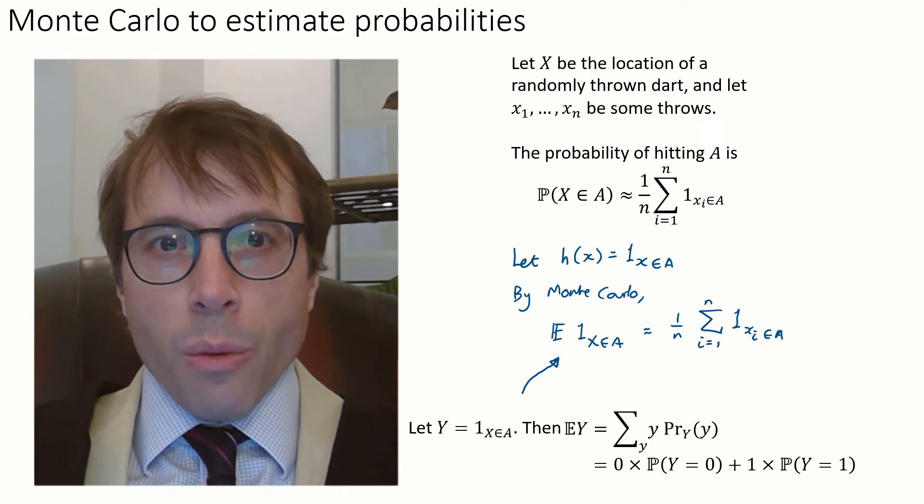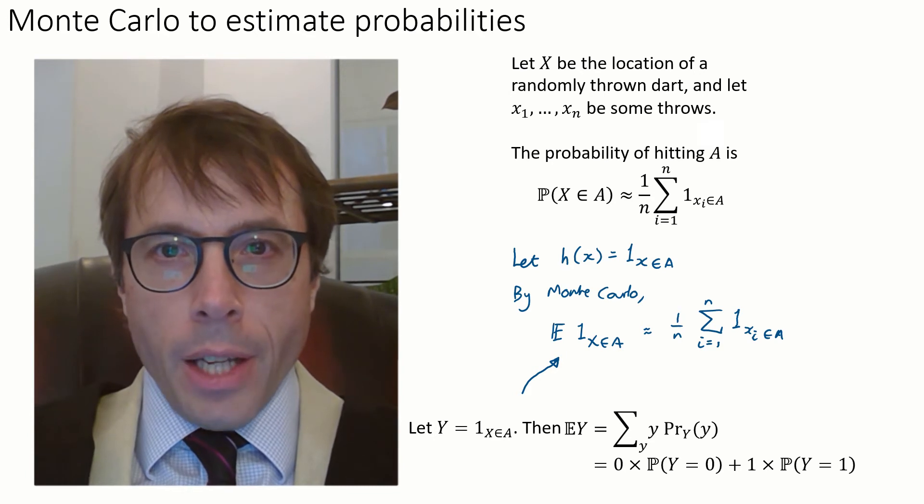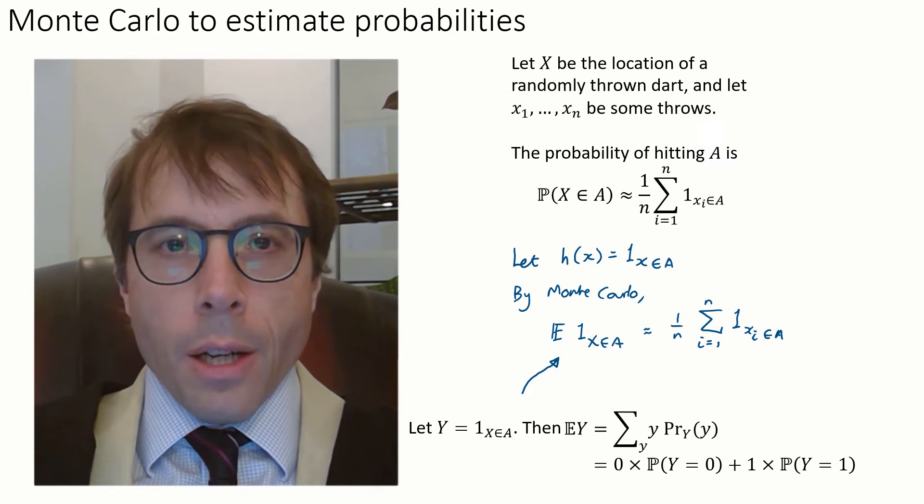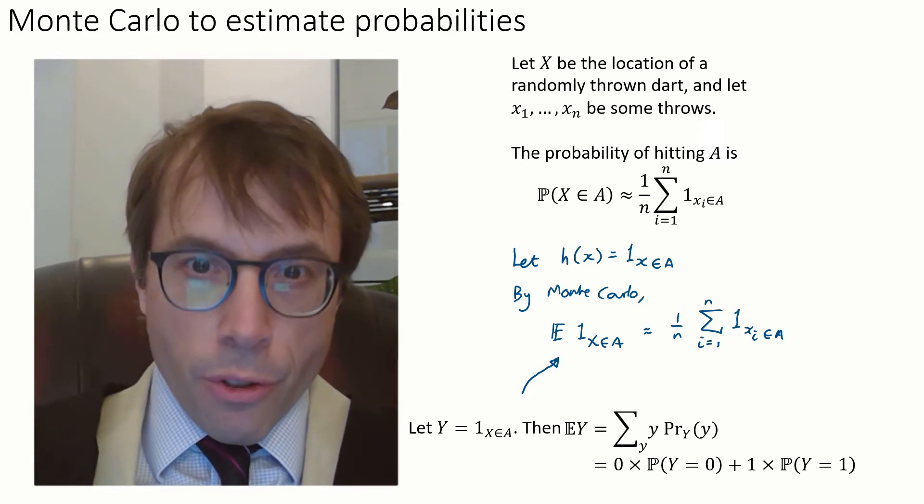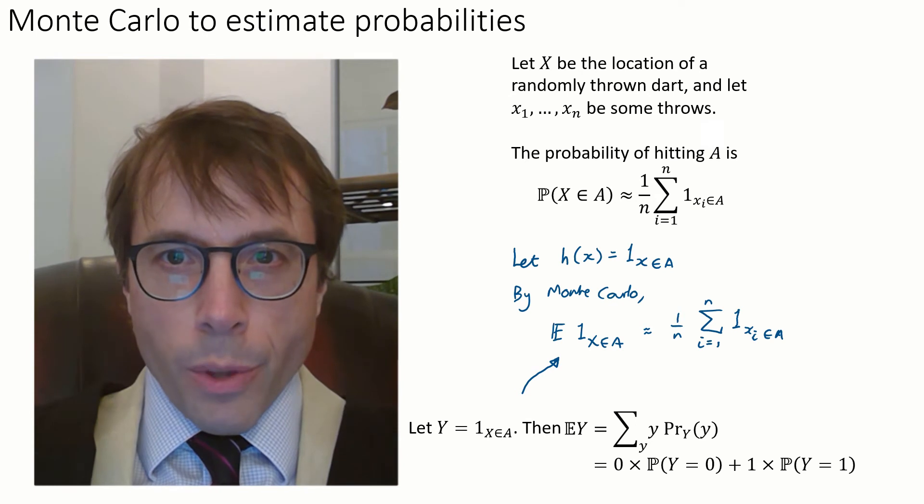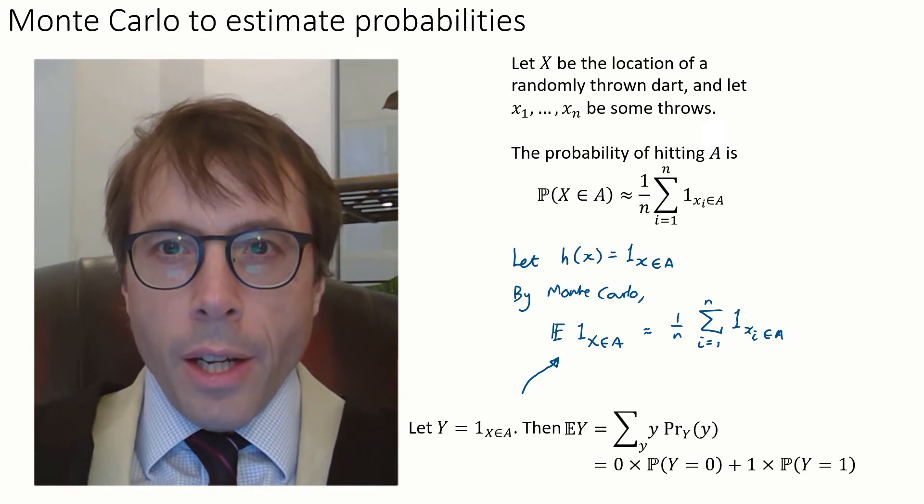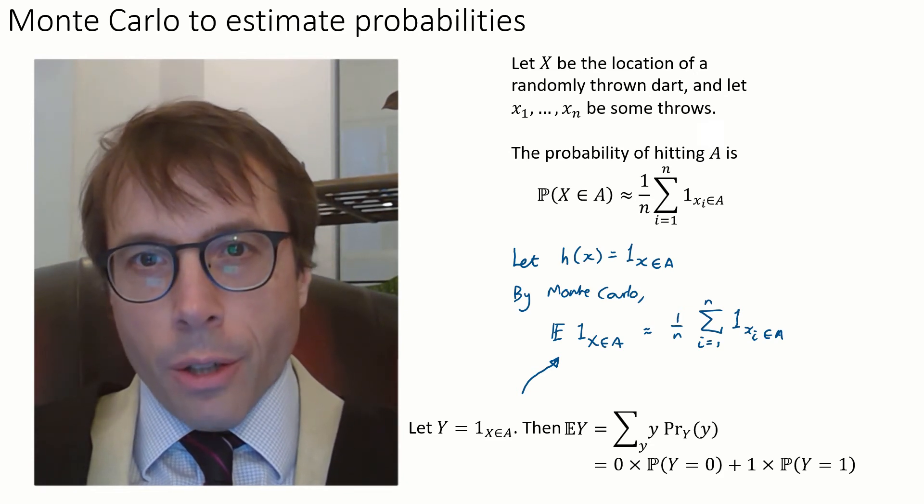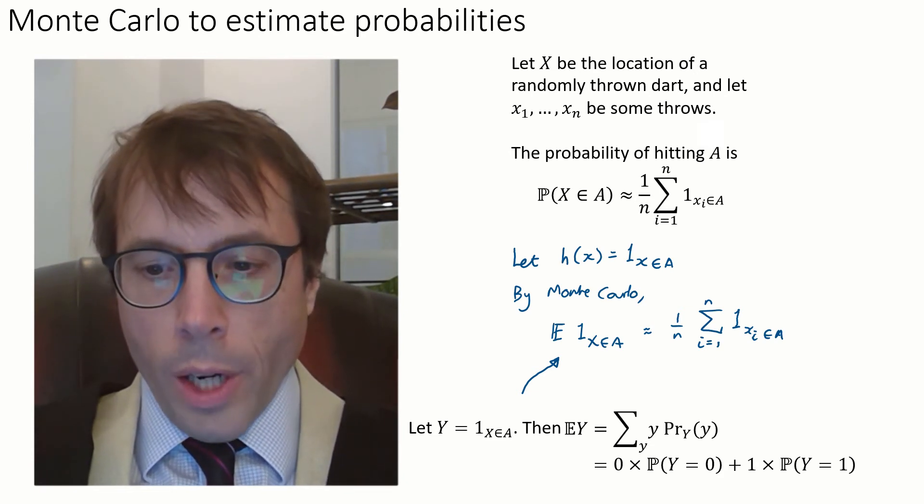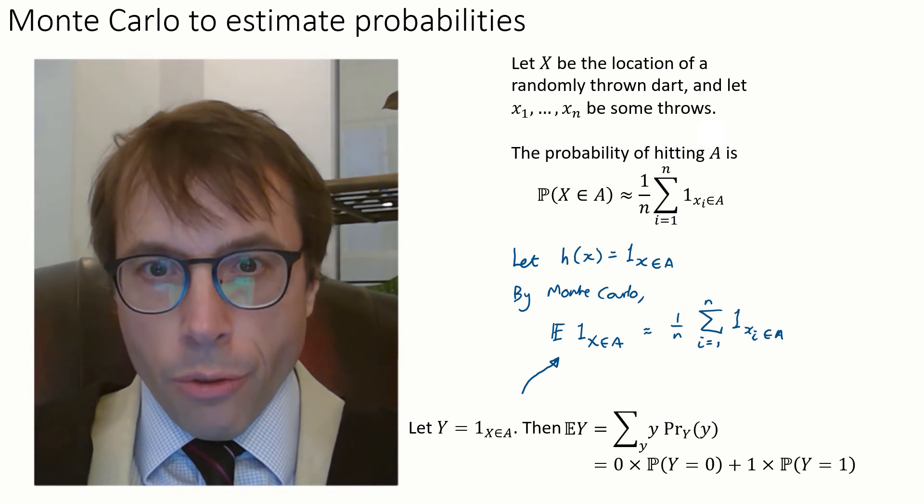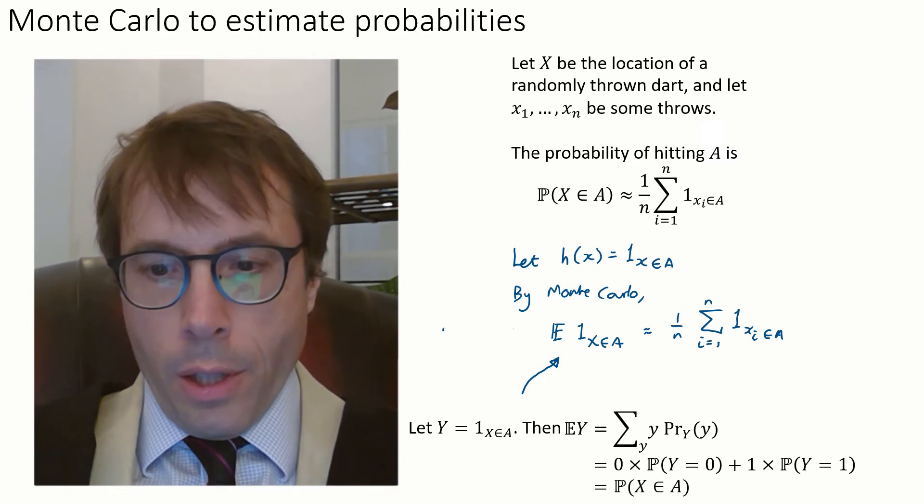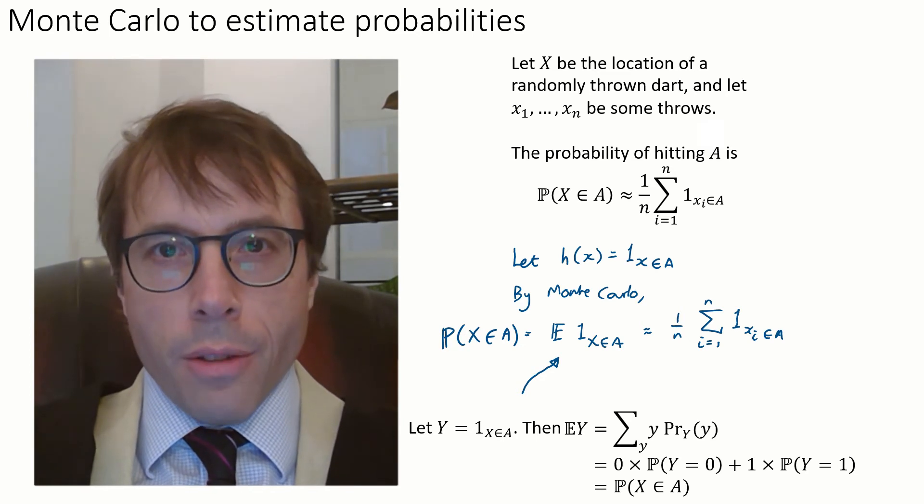Let's say let y be the indicator that x is in A. Here x is a random variable and so y is a random variable too. Then by definition of expectation, the first simpler definition of expectation that we saw, the expected value of y is the sum over all the values it can take of little y times the likelihood of little y. y is an indicator so it only takes two values, 0 and 1. So all we're left with is the probability that y equals 1, which is nothing other than the probability that x is in A.